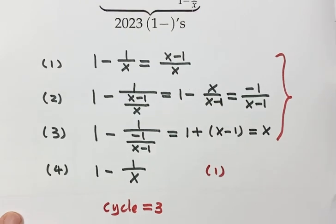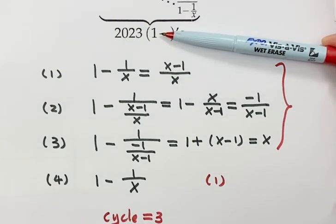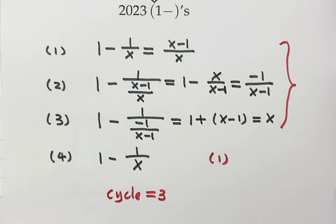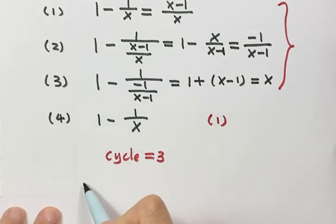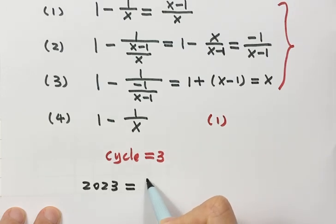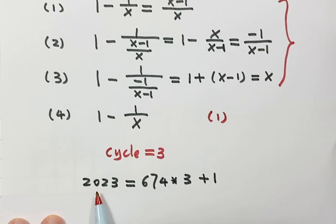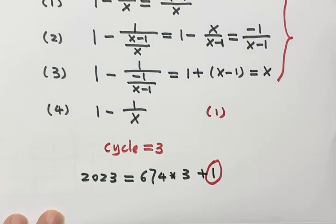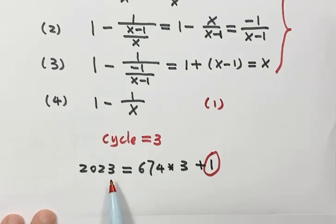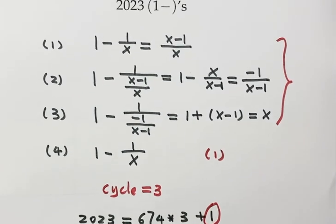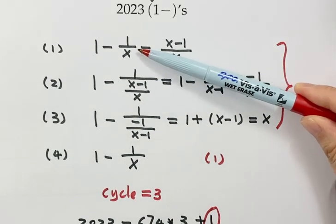Because here we have 2023 steps, now let's see. 2023 equals 674 times 3 plus 1. So that means after 2023 divided by 3, it has a remainder of 1. So that means for the 2023 steps, it has the same value as step one, 1 minus 1 over x.